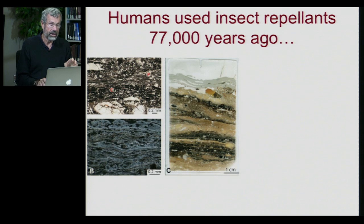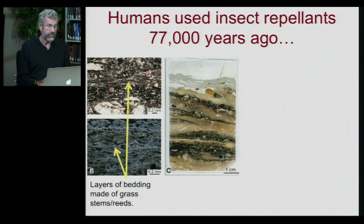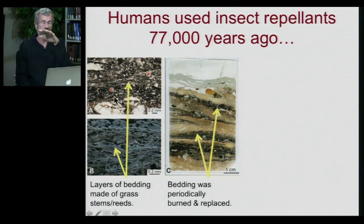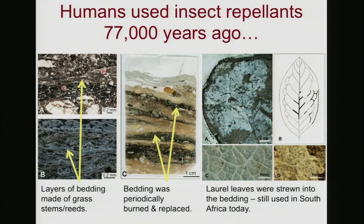Our own ancestors, 77,000 years ago, used similar tactics to the wood rat. In some archaeological sites in Africa, there are the remnants of bedding in the caves where people slept. It's very clear from the layers of grass, stems, and reeds that the same place was used year after year. People would sleep on the same place on the floor, every now and then burn the bedding and replace it — layers of ashes and bedding. They liked to use certain kinds of leaves: laurel leaves. Laurel leaves are close relatives to bay and are also insecticidal. So humans would line their earliest beds with an insecticide to reduce the number of lice and fleas.